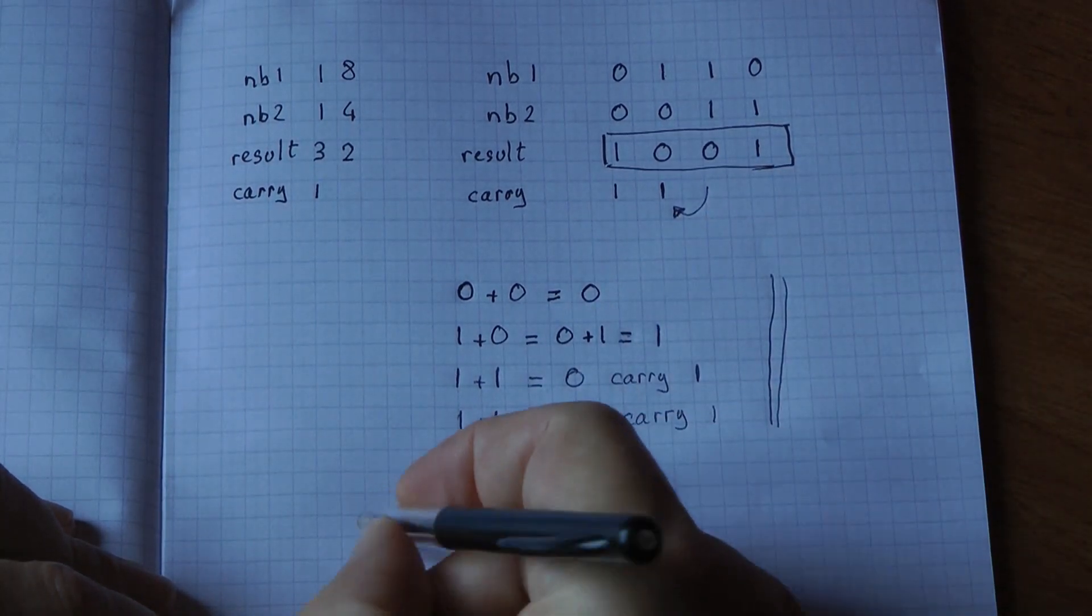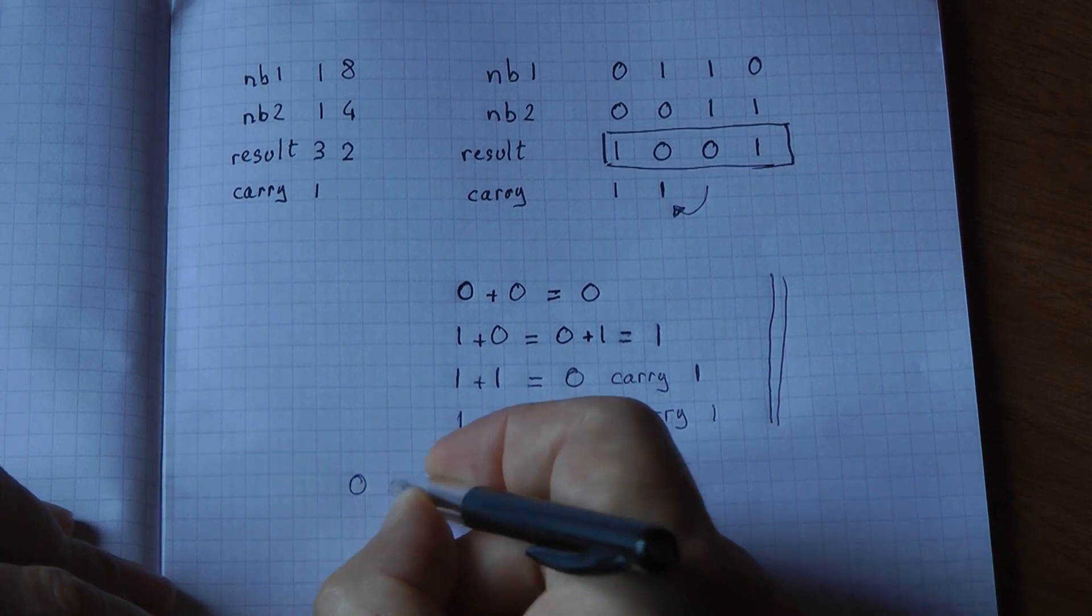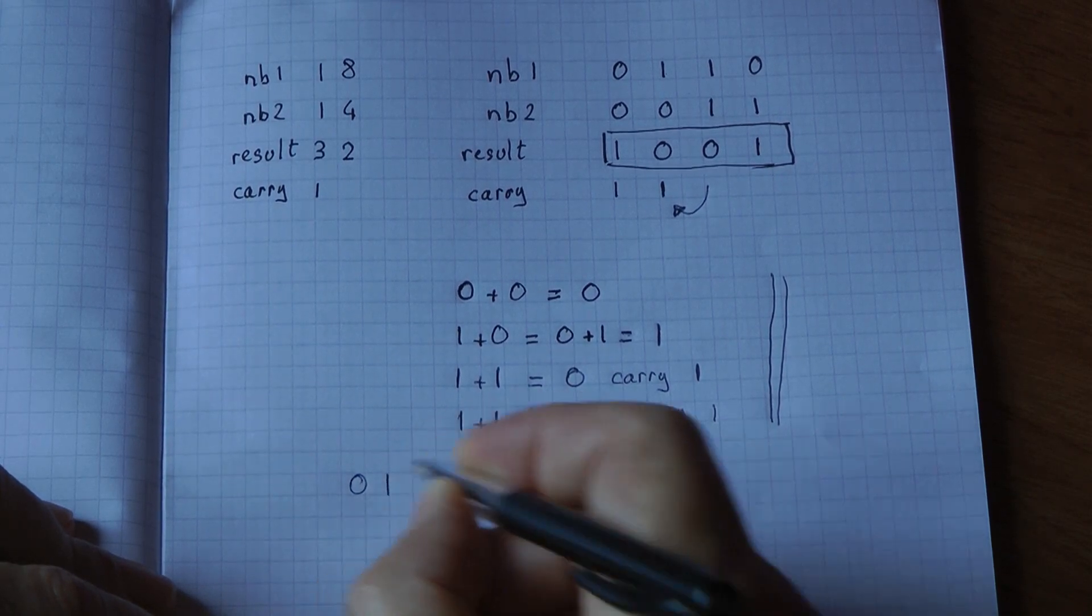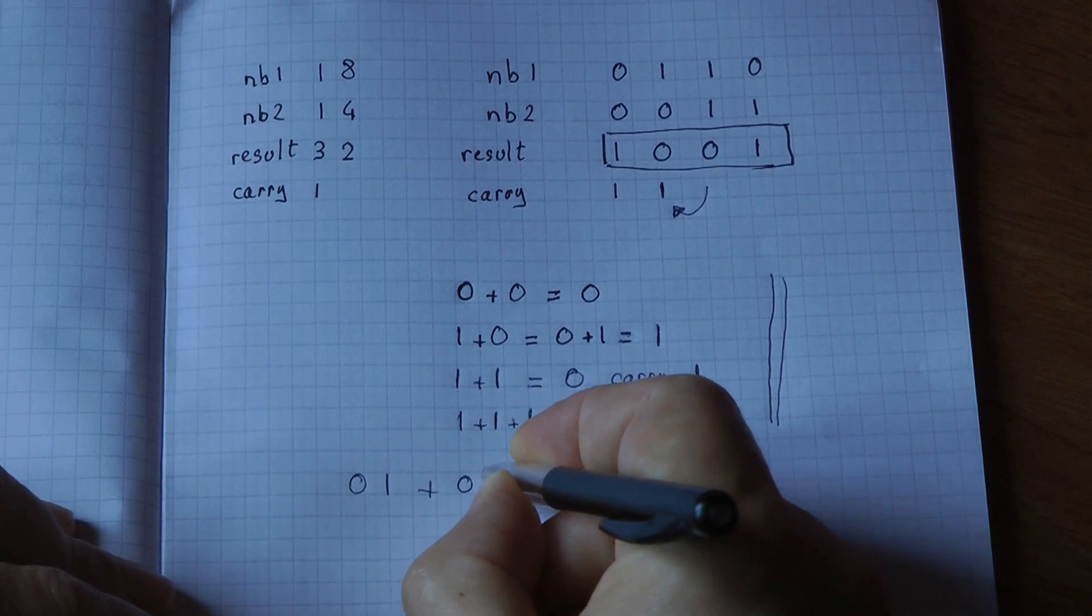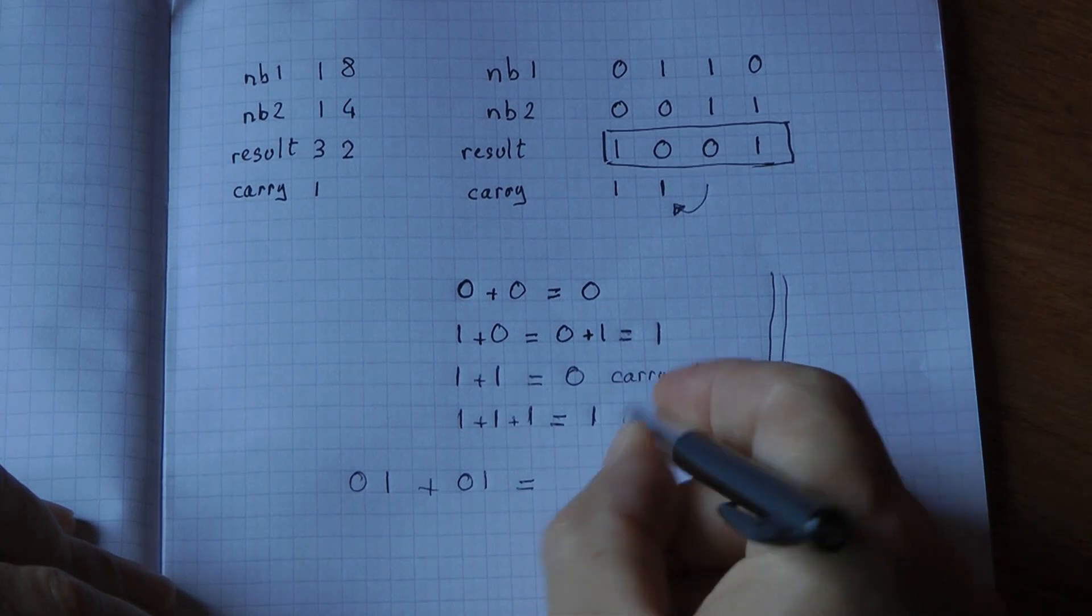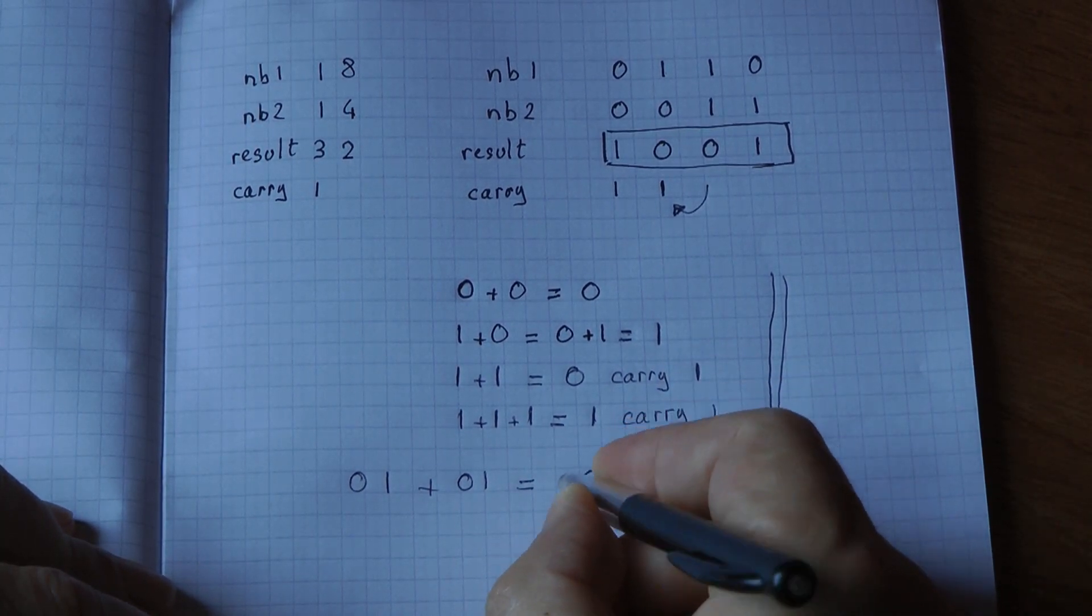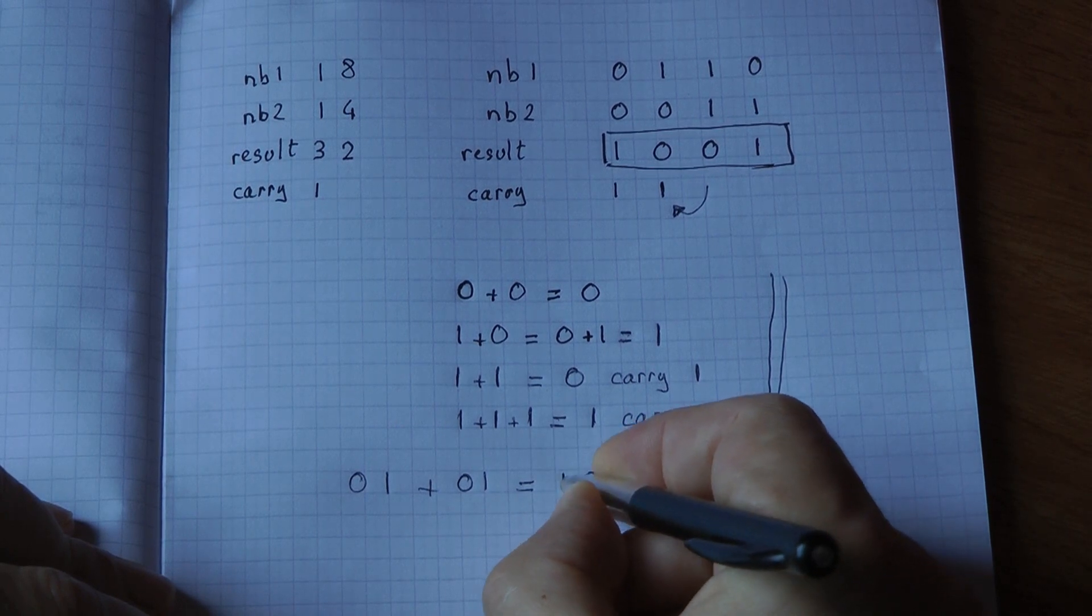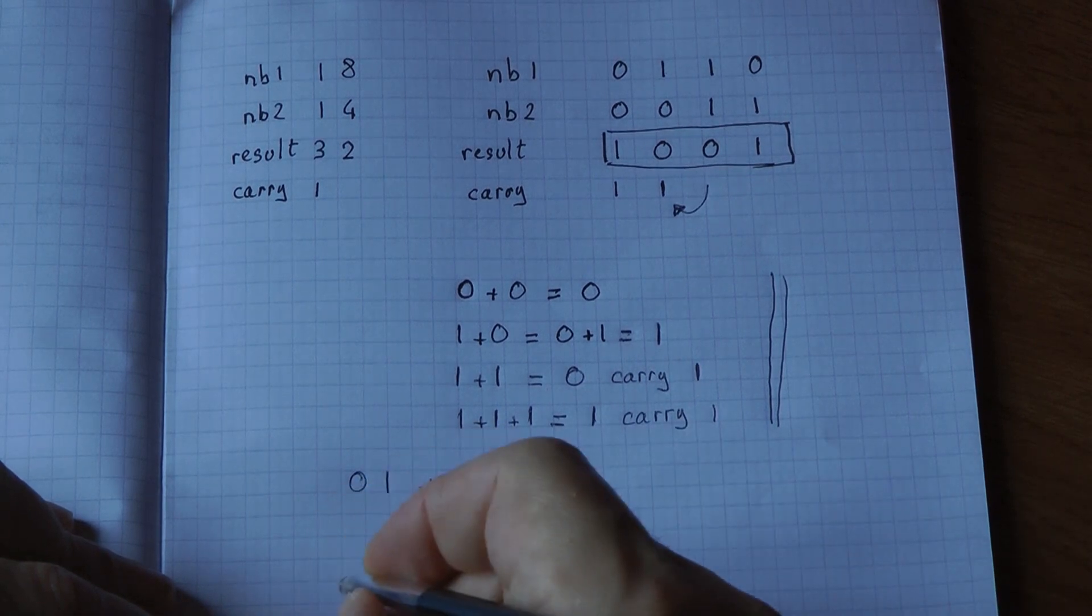So, if you was to write this same binary addition, but as a 2-bit binary, you would have 1 plus 1 gives you, same thing here, 0, carry 1. The carry is in the column to the left, the bigger column. So, that would be the result, which you recognize as being correct.